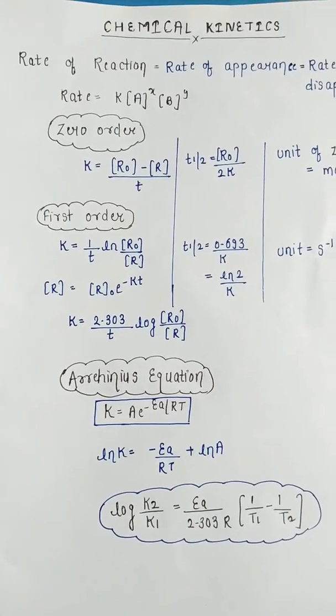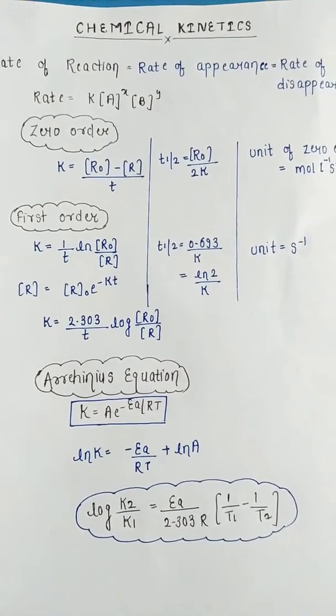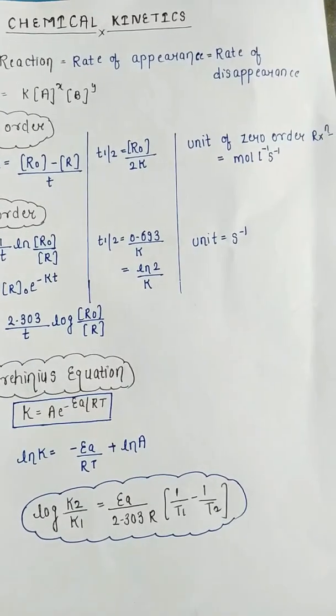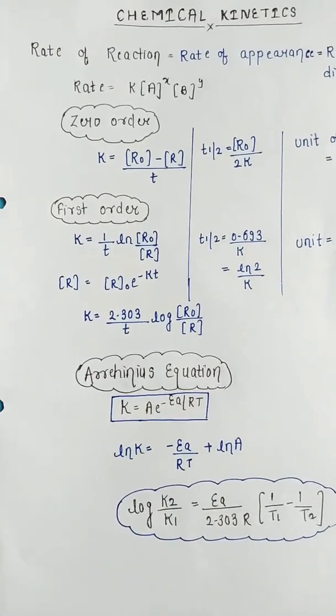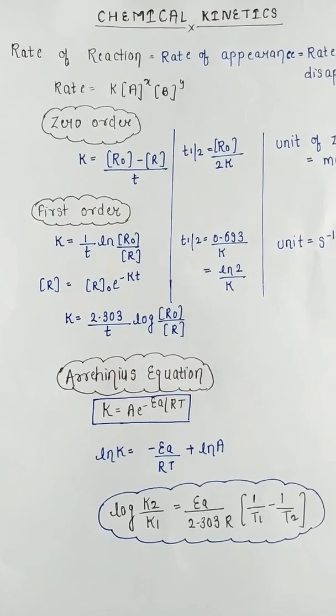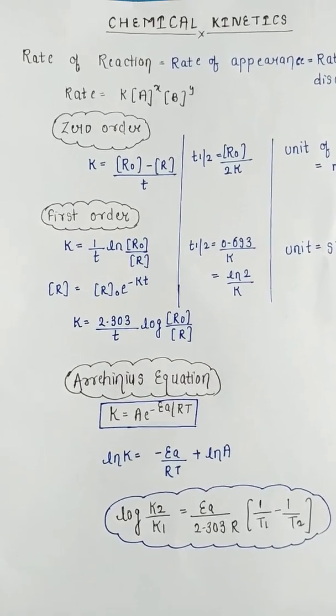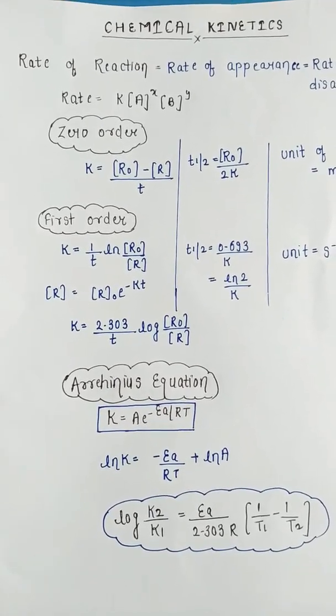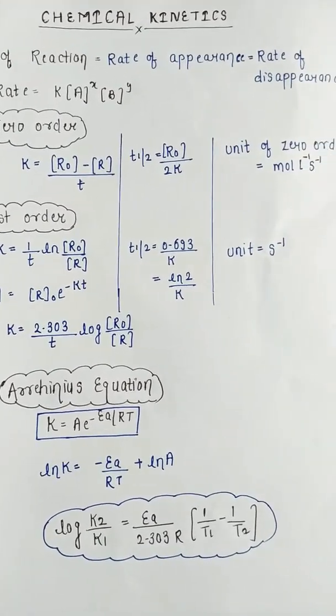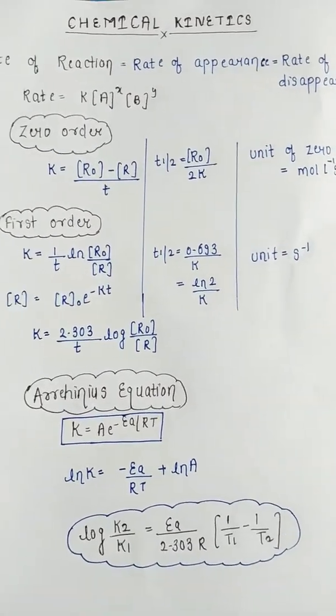In zero order, the half-life is written in the form R₀ by 2k and the unit is mol L⁻³ s⁻¹. For first order reaction, half-life is 0.693 by k where k is rate constant, R₀ is initial concentration, R is final concentration, and its unit is s⁻¹.